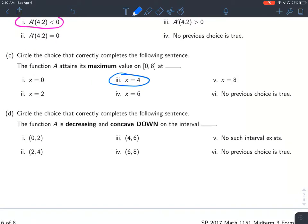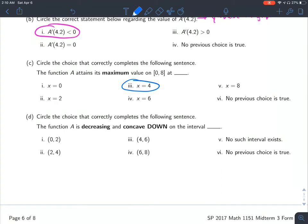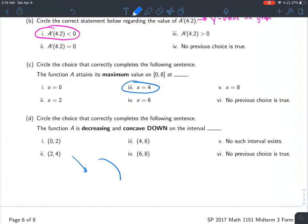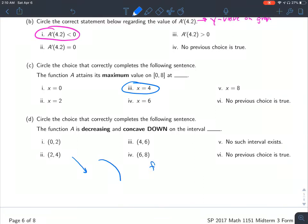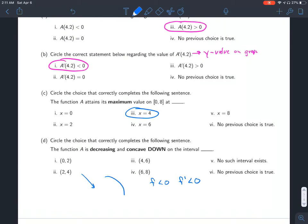D: Circle the choice that correctly completes the following sentence. The function A, that's the original graph, is decreasing. Decreasing means that it's going down from left to right and it's concave down on the interval. So to go down and be concave down is going to look like this. That's going to happen when f is less than 0 and when f prime is also less than 0.